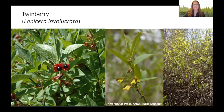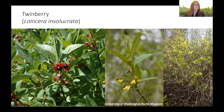Next, twinberry — another species that can be grown from cuttings, or if a branch droops down and contacts soil long enough, it will sprout roots. The flowers attract many pollinators and hummingbirds, like our native rufous hummingbird, which feeds on the nectar. This plant is called twinberry because its berries grow in little pairs. Although the berries are not for humans, they are great for birds.